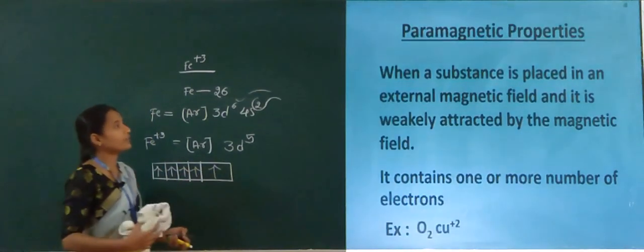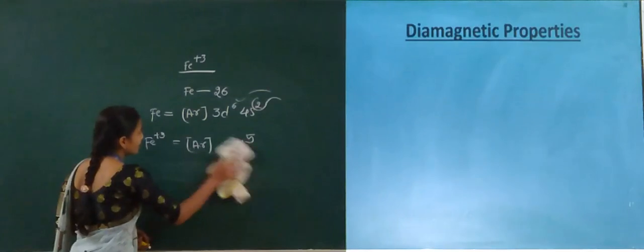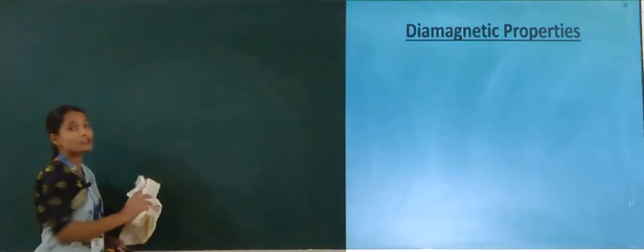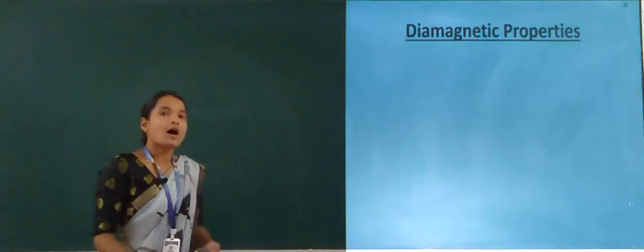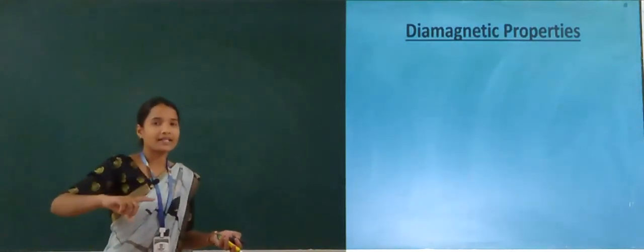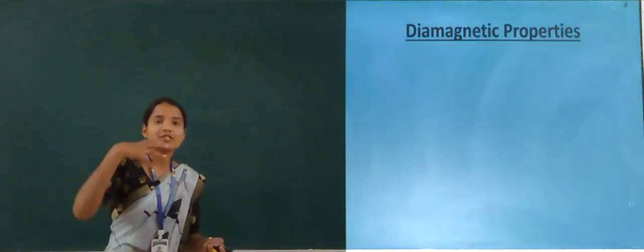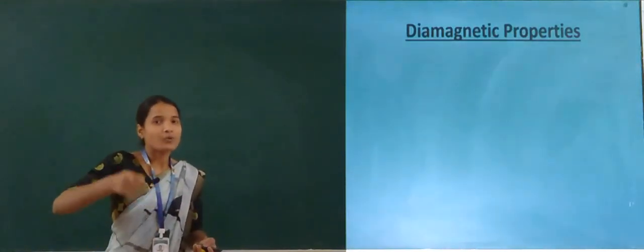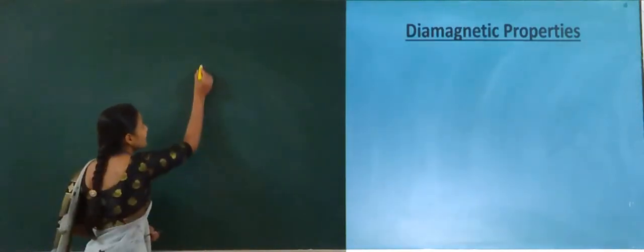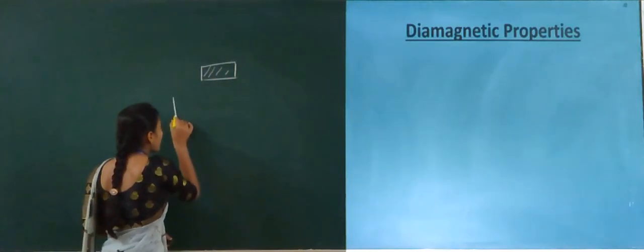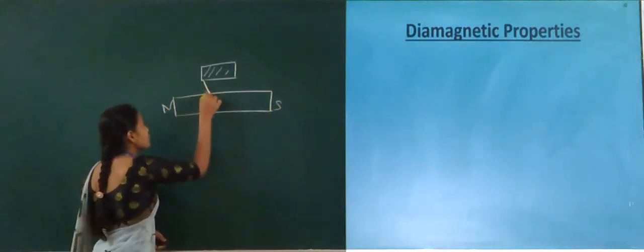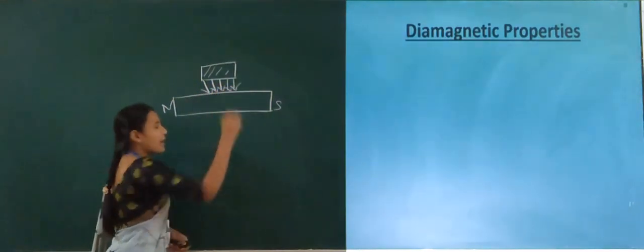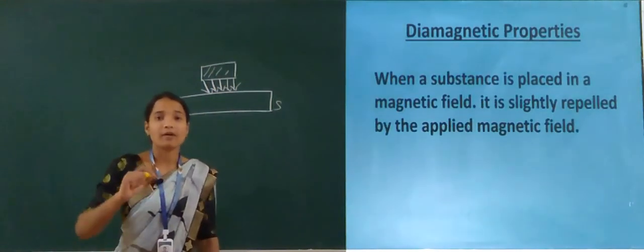The second type of magnetic property is diamagnetic. Diamagnetic property is the opposite of paramagnetic. When a substance is placed in an external magnetic field, it is strongly attracted by that magnetic field. This is known as diamagnetic property.